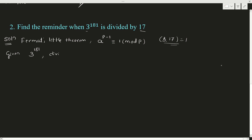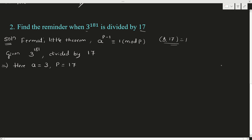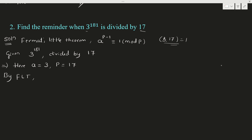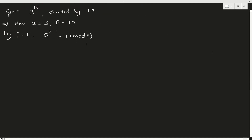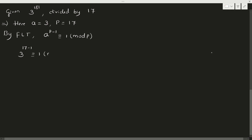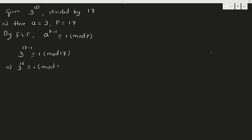A is 3, P is 17. By Fermat's Little Theorem, A raised to P minus 1 is congruent to 1 mod P. Substituting: 3 raised to 17 minus 1, which is 3 raised to 16, is congruent to 1 mod 17.